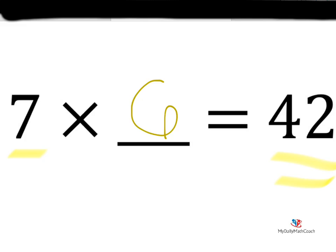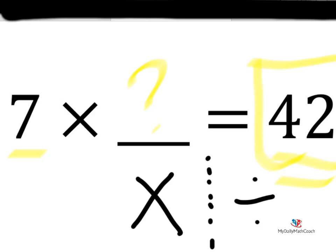So let's use a strategy that's called opposite operations. And this does work with multiplication. So we're back to our problem. 7 times what number equals 42? And since we are dealing with multiplication, the opposite operation of multiplication is division. Division and multiplication are opposites.